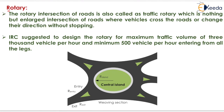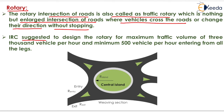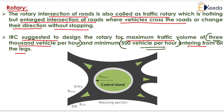The next topic is the rotary. The rotary intersection, also called a traffic rotary, is a large intersection where vehicles cross or change direction without stopping. IRC suggests designing the rotary for a maximum traffic volume of 3000 vehicles per hour, and the minimum number of vehicles is 500 vehicles per hour entering from all legs.